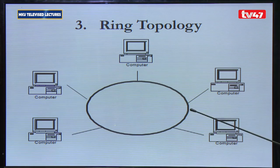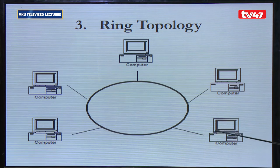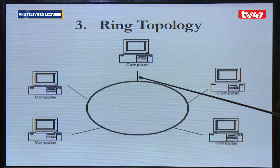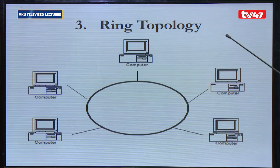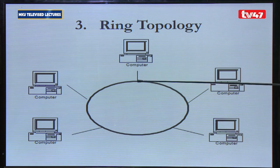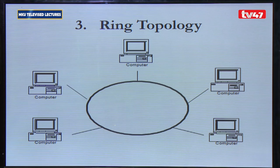The process continues until the message gets to the computer whose address matches the one encoded in the message. In this case, the message was moving from computer 1 to computer 3. Once it gets there, computer 3 picks the message, and the token continues its journey back to the transmitting device. If the transmitting computer has no more data to transmit, it creates a new token and releases it on the network so any other computer with data can use that token. At any given time, only one token exists in a ring network, so two computers cannot transmit data at the same time.